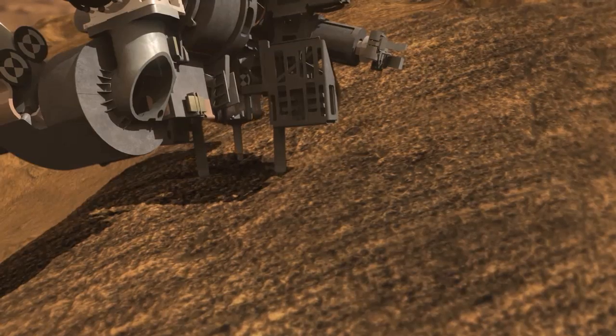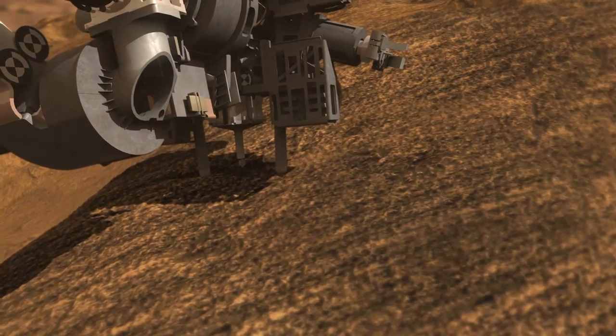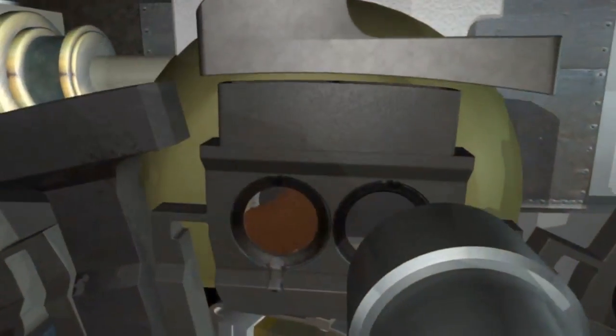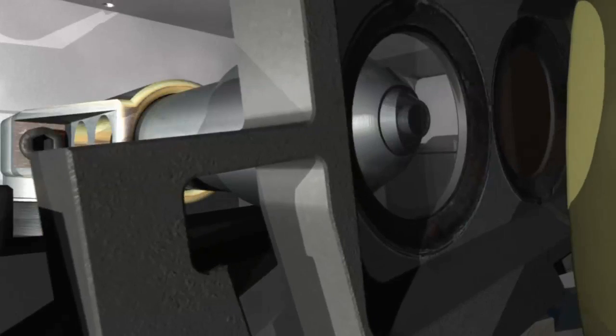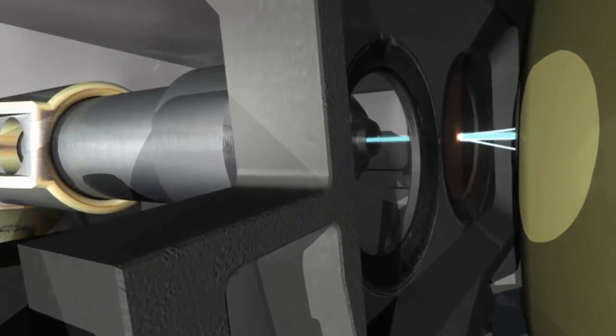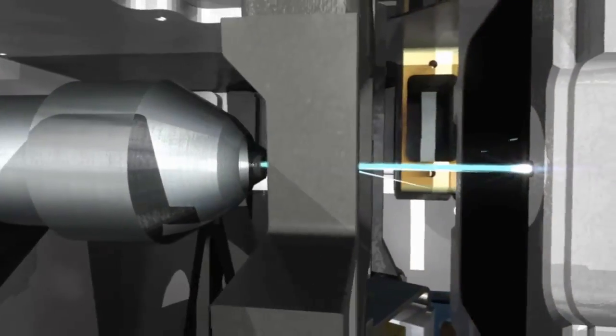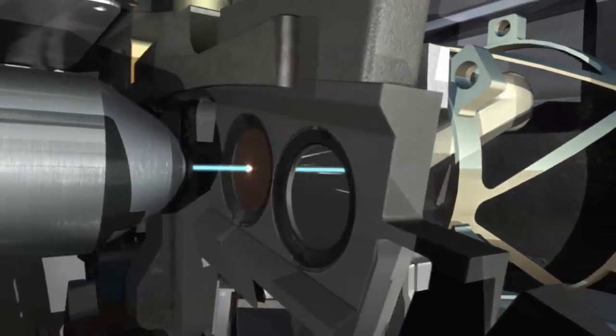An instrument named ChemCam, capable of vaporizing thin layers of material from rocks or soil, designed to identify atoms and capture detailed images of the area. The drill on the arm allows it to grab some of the rock and deliver it to the laboratory instruments inside the body of the rover. And the radiation assessment detector to analyze the radiation environment at the surface.